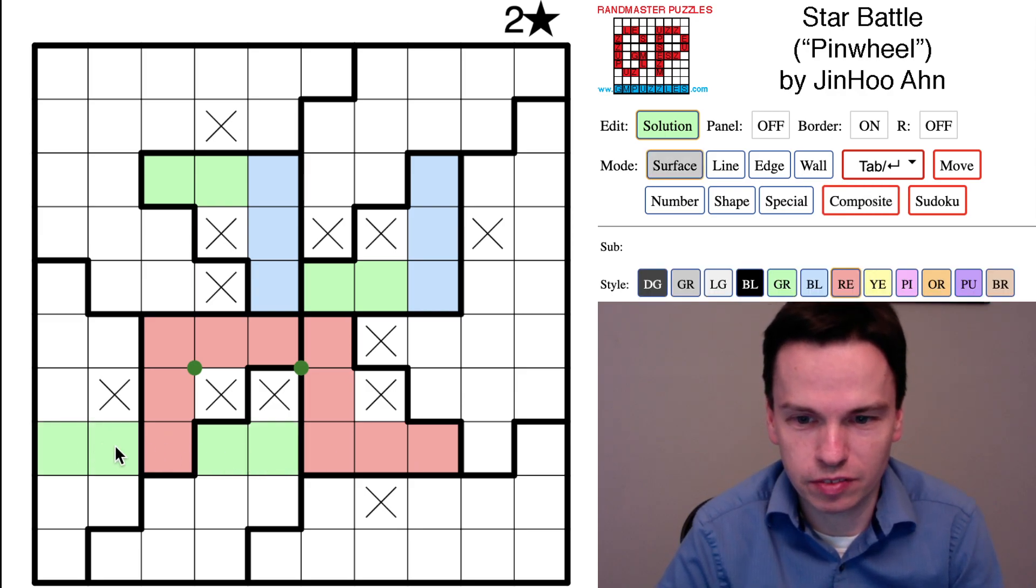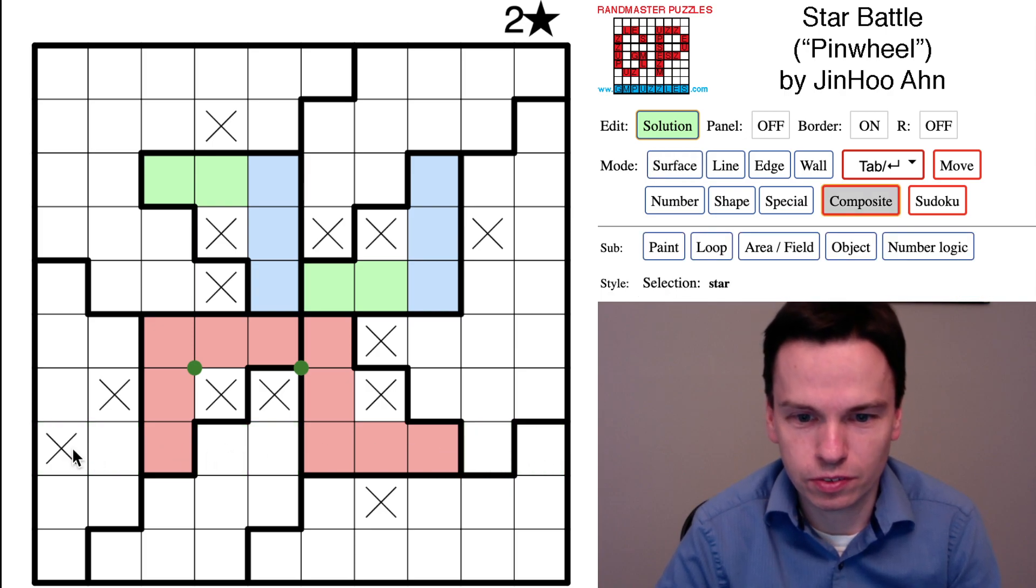And that means that every cell here in green cannot be a star because we'd place three stars in that row. And so the cancellation that I'm showing in red is true for any of the two veins of the puzzle.